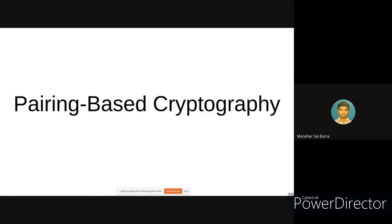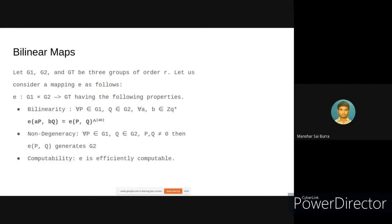Let us start with the core preliminary of pairing-based cryptography called bilinear maps, or the pairing function. Bilinear maps take two inputs: one element from group G1 and another from group G2, and map to an element in group GT, where G1, G2, and GT are of the same order. The bilinear map has three properties. The first is bilinearity: given P from G1 and Q from G2, and values a and b from Zq*, the pairing function e(aP, bQ) should output an element from the target group GT equal to e(P,Q)^(ab).